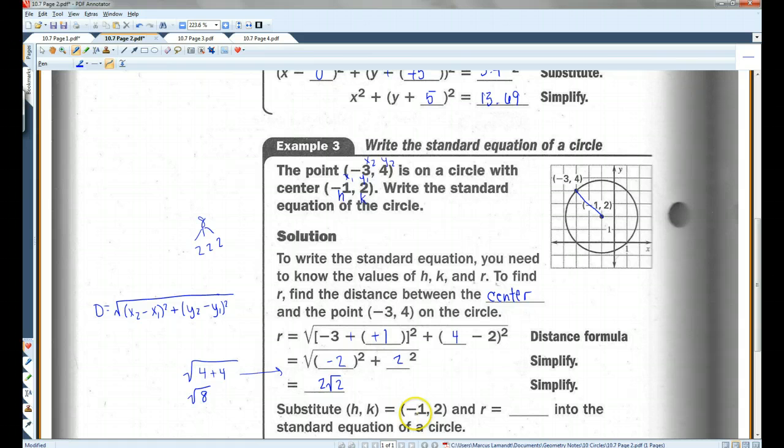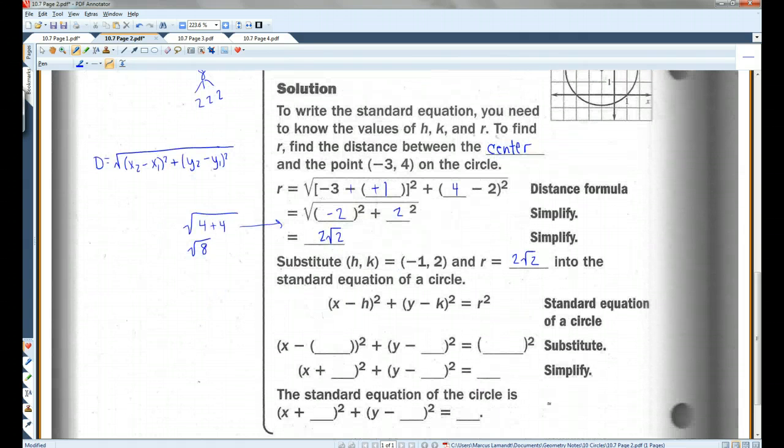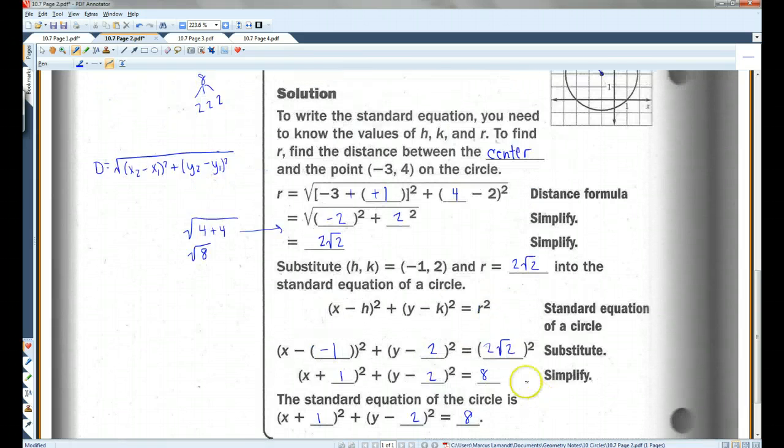All right, so substitute h, k equals (-1, 2), and r equals 2 root 2 into the standard equation of a circle. So x minus negative 1, y minus 2, 2 root 2 squared. This is x plus 1, y minus 2, and this is 8. So this is the answer. Voila. All right, let's go on to page 3.